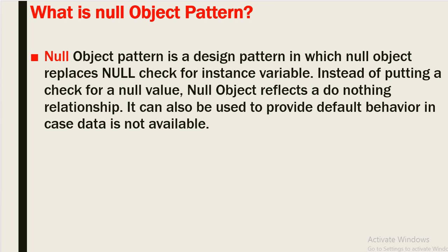What is null object pattern? Null object pattern is a design pattern in which a null object replaces a null check for an instance variable. Instead of putting a check for a null value, the null object reflects a do-nothing relationship. It can also be used to provide default behavior in case data is not available.